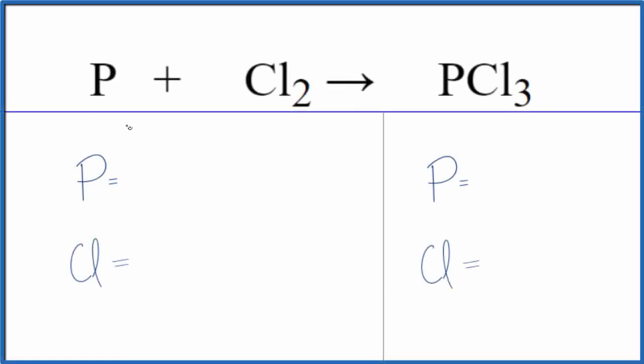This is Dr. B and in this video we'll balance the equation for P plus Cl2 gives us PCl3. Phosphorus plus chlorine gas gives us phosphorus trichloride.